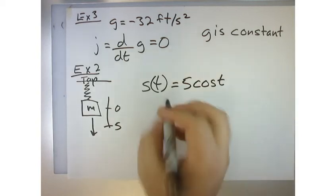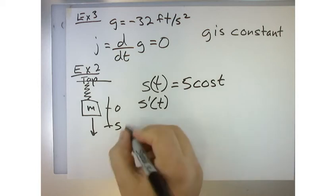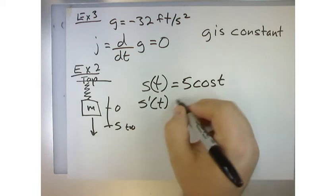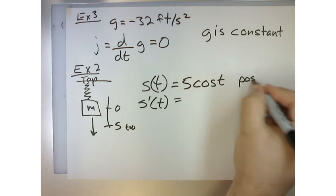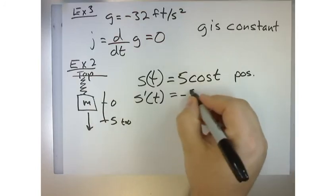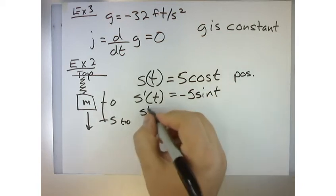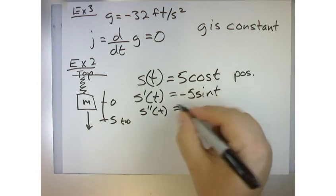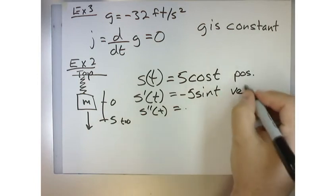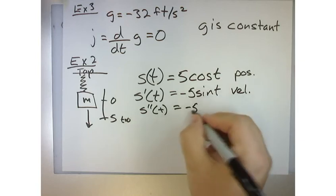And we said that the position of the spring over time was modeled by five cosine of t. And then in example number two, we said that the velocity at any point in time, t, so right here would be t equals zero, was modeled by the derivative of this. So this is the position. The velocity would be negative five sine of t.